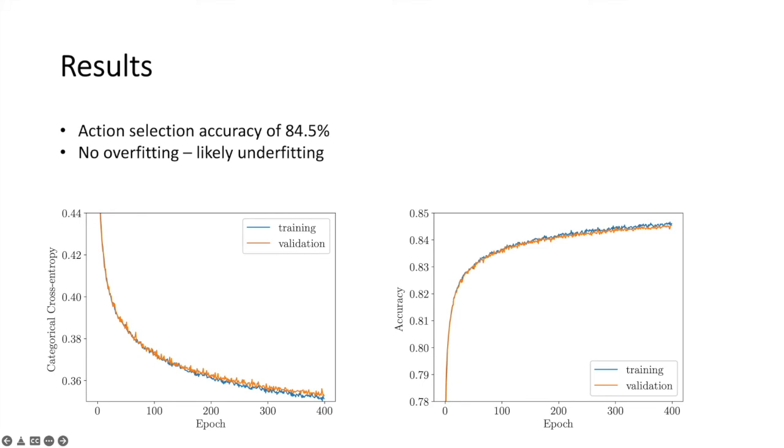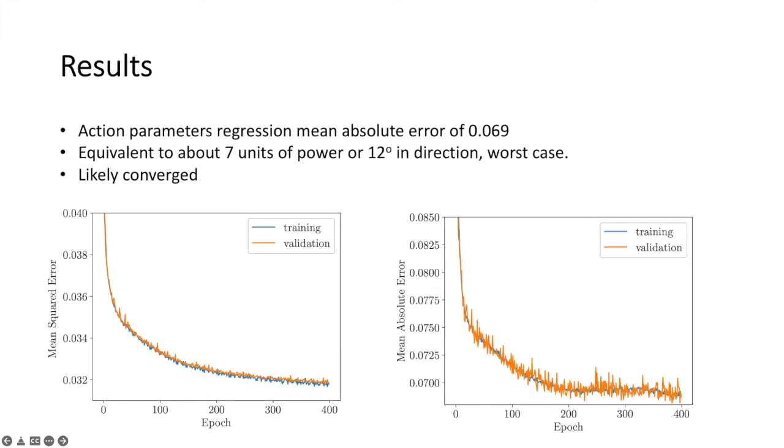Our deep learning model was able to achieve an accuracy of 84.5% on action selection and had no signs of overfitting. Also, we achieved a significantly low mean absolute error of 0.069 for the regression target.